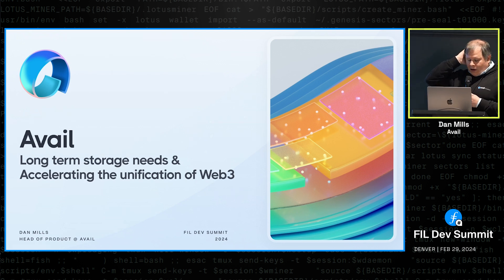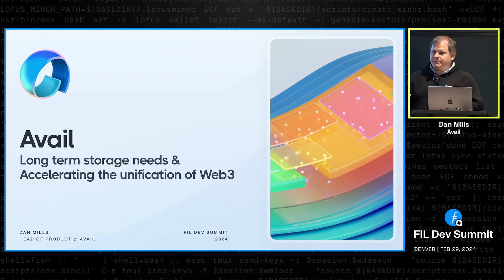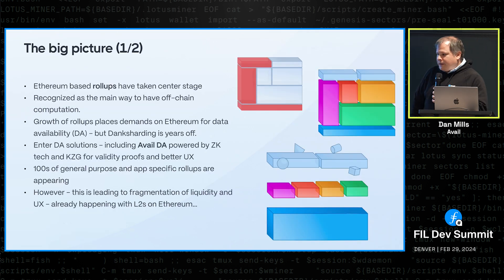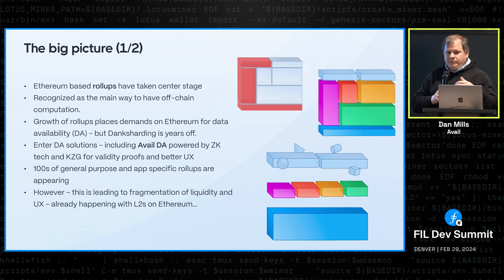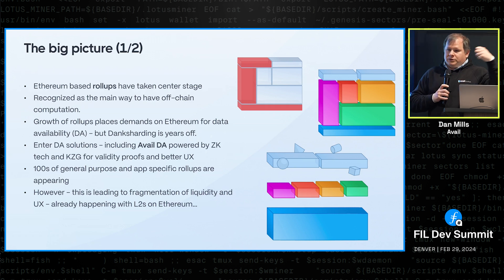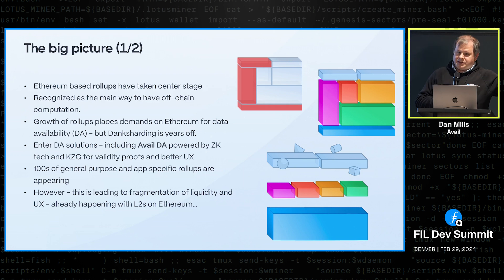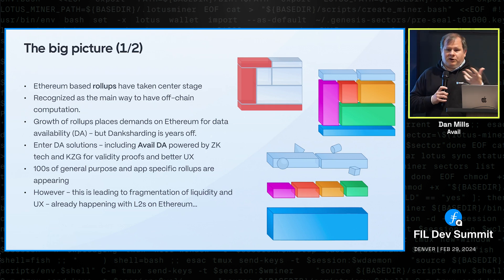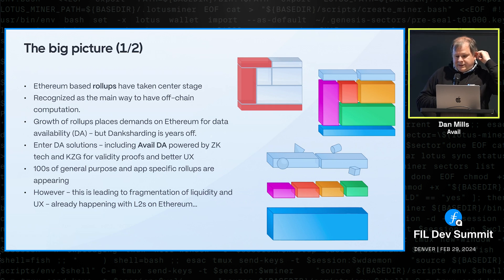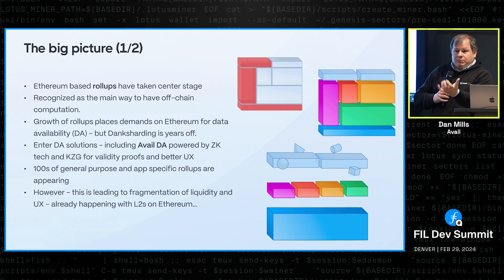Taking a step back and thinking about how we got here — how DA became this big narrative — Ethereum did a big pivot to rollups around 2020. It was pretty clear at the time to the team that became the Avail team that rollups would need some specialized infrastructure to work efficiently. Rollups take computation off-chain, allowing execution outside the chain, but they commit transaction data or state diffs to the L1 so others can verify the rollup is executing correctly. Although you can scale execution, you can't scale effectively because you're still limited by Ethereum's block size.